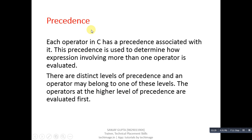Each operator in C has a precedence associated with it. The precedence is used to determine how an expression involving more than one operator is evaluated. There are distinct levels of precedence and an operator may belong to one of these levels. The operators at the higher level of precedence are evaluated first. It is equivalent to a BODMAS rule that we used in maths.